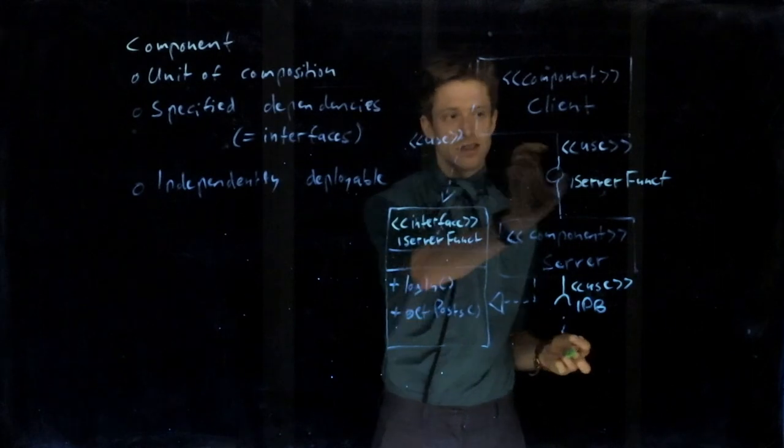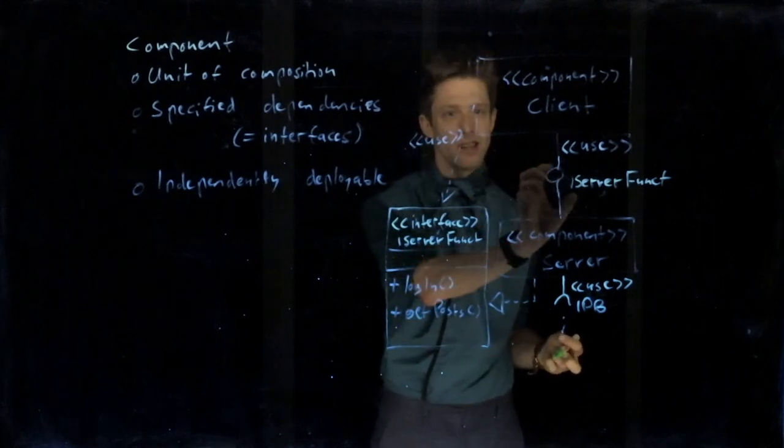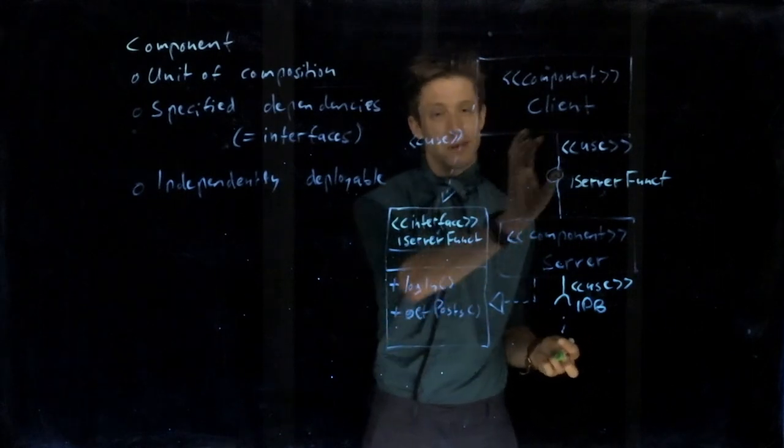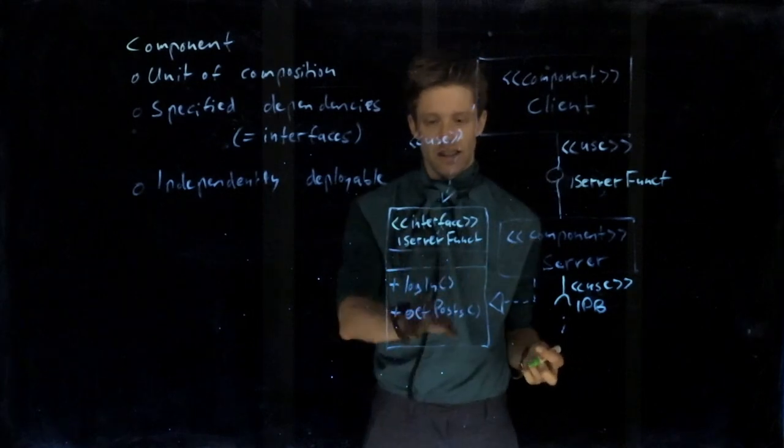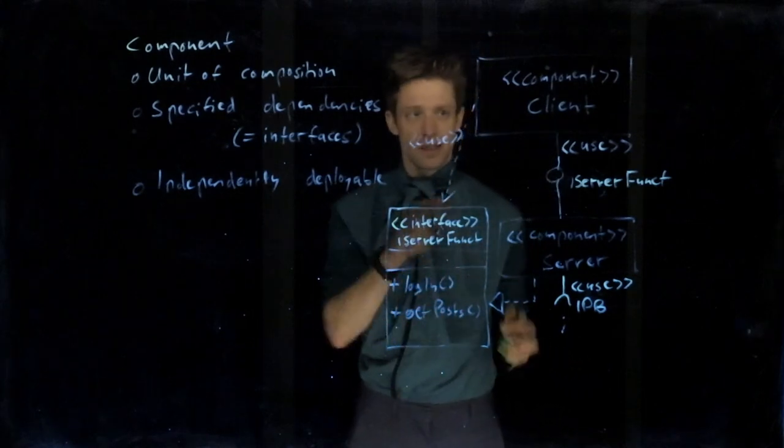So this is somehow the more explicit version compared to this. That's the original UML notation. This is the short version that is typically used in a lot of systems because it's much more readable. But if you need to know the details on the interface, of course, you somehow need to have this somewhere.